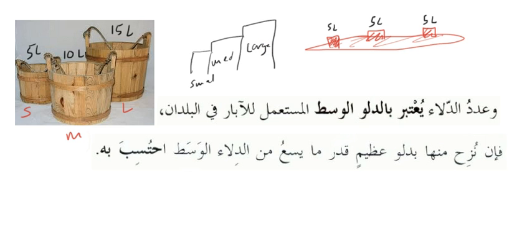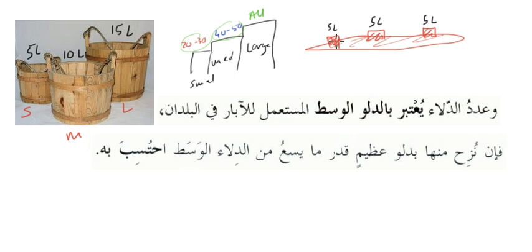So how do we calculate the previous calculations mentioned with regards to various sizes of animals? We have the small animal, the medium animal, and the large animal. The small animal requires twenty to thirty buckets, the medium requires forty to fifty, and the large requires all the water.